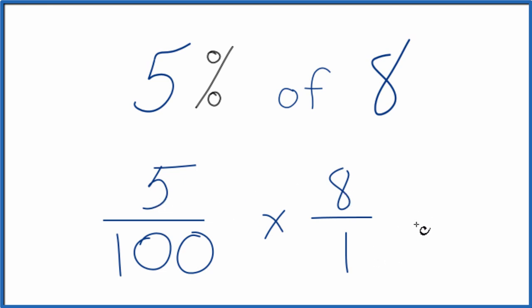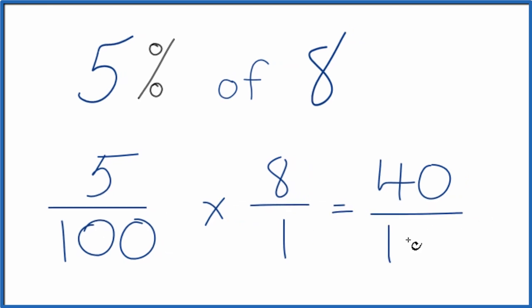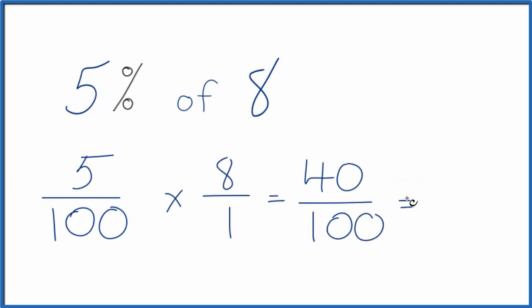5 times 8 equals 40. 100 times 1 equals 100. And if you divide 40 by 100, you get 0.4. You could call that 0.40 as well.